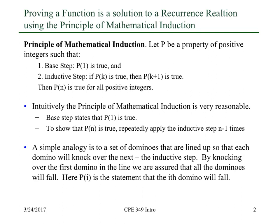By knocking over the first domino in the line, we are sure that all the dominoes will fall. The principle of mathematical induction is just a formal way of saying that if P(1) is true and P(k) knocks over P(k+1), then it's true for all positive integers. This is useful in lots of cases. We'll use it to prove correctness for greedy algorithms, but for right now we're focusing on finding and proving solutions for recurrence relations.